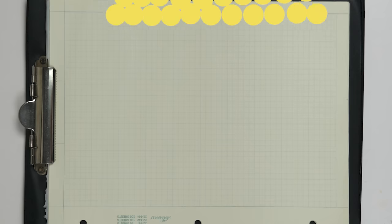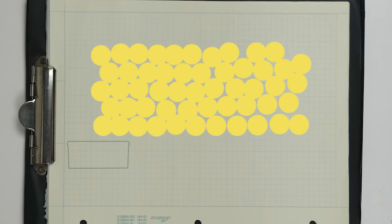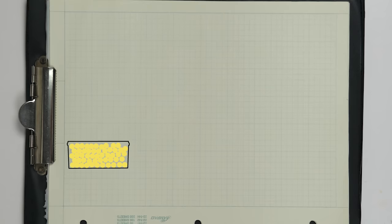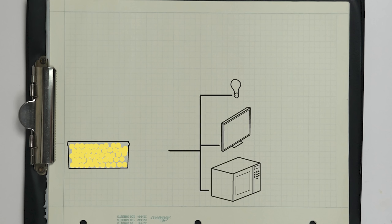I like to think of energy as little tokens because a battery bank can only hold so many. When we power something like a light, TV, or microwave, they use tokens from our bank. So the size of our battery depends entirely on how many tokens we want to use.